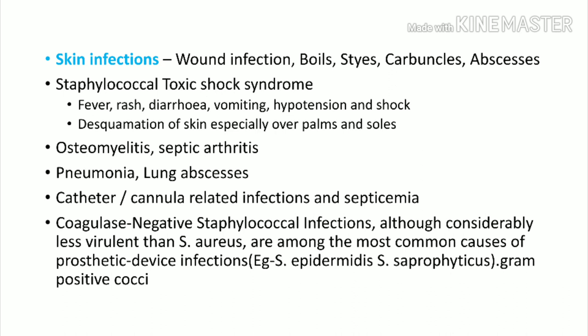Skin infections are the classical problem. Staphylococcal infection can lead to toxicity called staphylococcal toxic shock syndrome. It can also be produced by streptococcus. The patient will have high-degree fever, skin rashes, diarrhea, vomiting, hypotension, and shock. Blood pressure can go down. Skin lesions classically present initially with rashes, then desquamation of skin, mainly seen on the palms and soles.